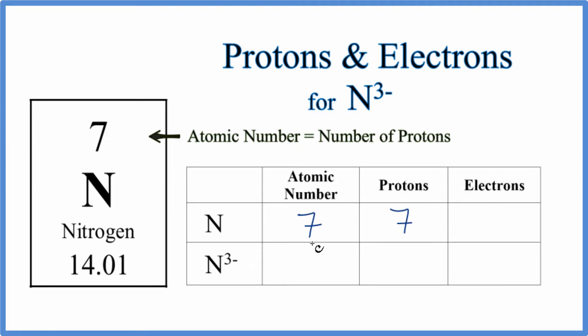So for N3-, the nitride ion, we'll still have an atomic number of seven and seven protons. Those stay the same. It's the electrons that are going to be different.